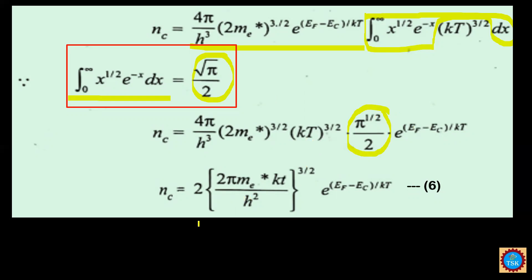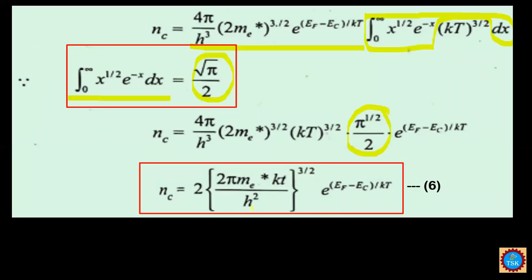Finally, NC equals 2 × (2π Me* kT / h²)^(3/2) × e^((EF − EC)/kT). This equation represents the concentration of charge carriers in the conduction band of an intrinsic semiconductor.